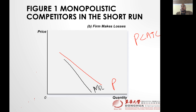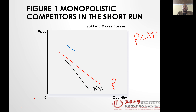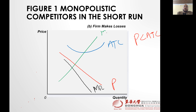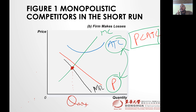Remember, MR is always less than the price. The average total cost curve sits above the price line in the loss condition, and below that is MC. We need to produce where MC equals MR. In this condition we are making a loss, but the loss is minimized when we produce where MC equals MR — that is the minimum loss or maximum-profit point.